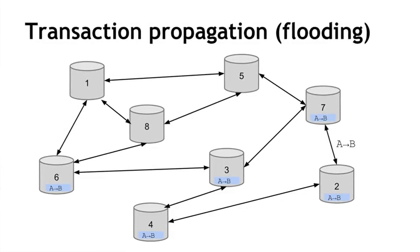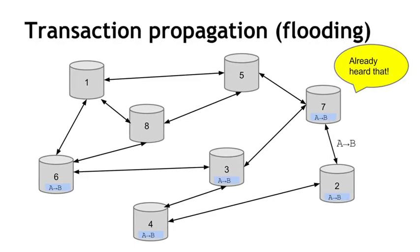We want to make sure this process doesn't go on forever. If node 2 comes along later and tries to tell node 7 about the transaction, node 7 will say that's alright, I've already heard about that — it's already in my memory pool, I don't need to forward it further. Eventually this stops because every node will have heard about the new transaction and won't forward it anymore. Every transaction is identified uniquely by its hash, so each node can tell they've seen that hash before and don't need to keep forwarding it.